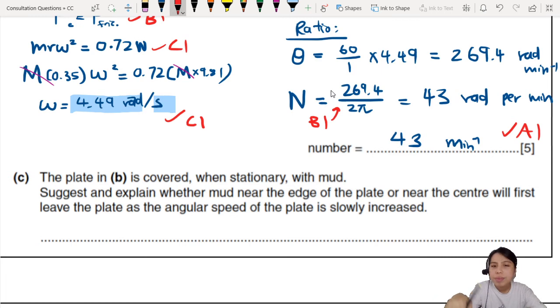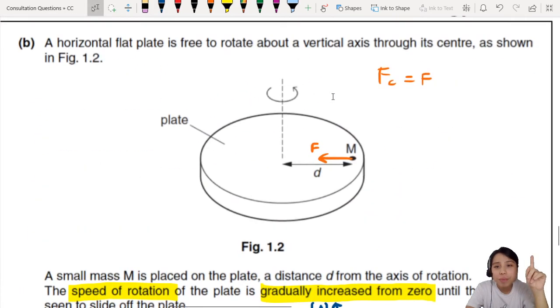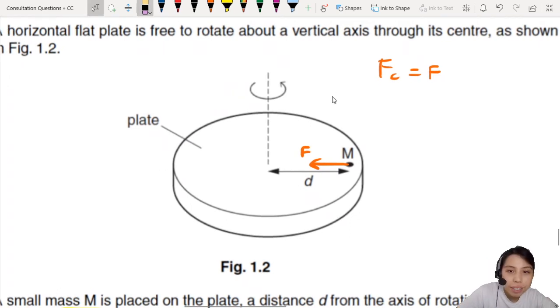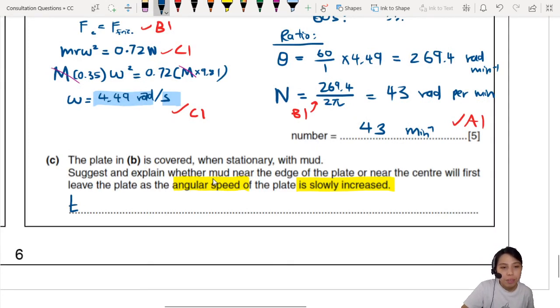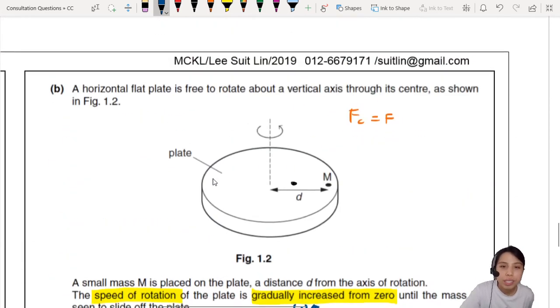The plate is covered with mud. Suggest and explain whether the mud near the edge or the center will first leave the plate when the angular speed is slowly increased. Imagine there's lots of masses. There's mass over there, maybe another mass nearer to the center. Which one will fly off first? The edge one will fly off first. Yes, but why? You need to be able to explain that.